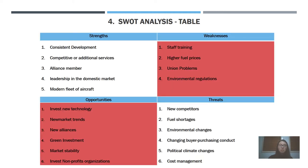The SWOT analysis table is divided into internal and external factors. The internal factors are strengths and weaknesses. The strengths are consistent development, competitive additional services, leadership in the domestic market, and a modern fleet of aircraft. The weaknesses are staff training, high fuel prices, union problems, and environmental regulation.